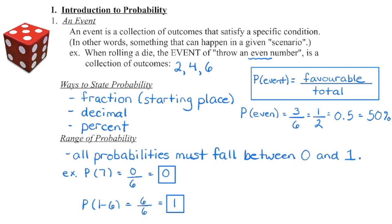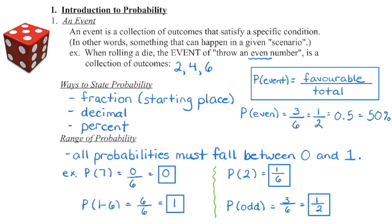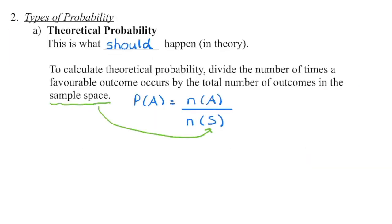A probability of 1 means that it is certain — we are guaranteed to get that particular event. Such as the probability of rolling a number from 1 to 6 on a regular six-sided die: six numbers out of six contain a number 1 through 6, so there is a 1 or 100% chance of rolling one of those numbers. Most probabilities fall somewhere between 0 and 1. This is the theoretical probability — mathematically what should happen. We take the number of times an outcome occurs divided by the total number of outcomes in the sample space, assuming each outcome has an equally likely chance of occurring.